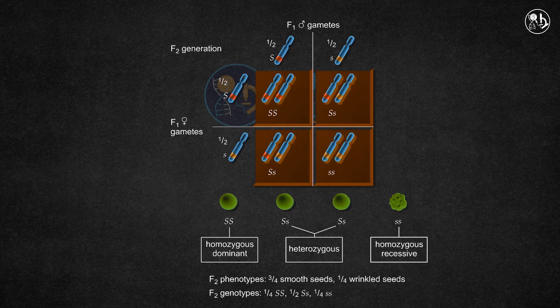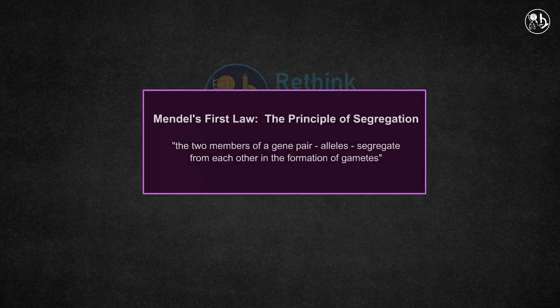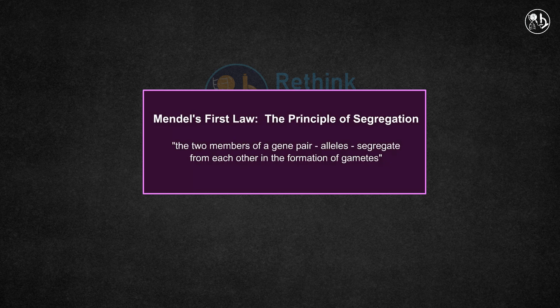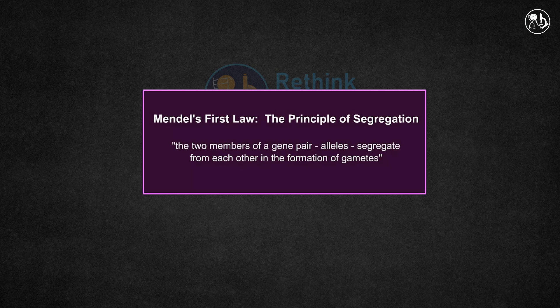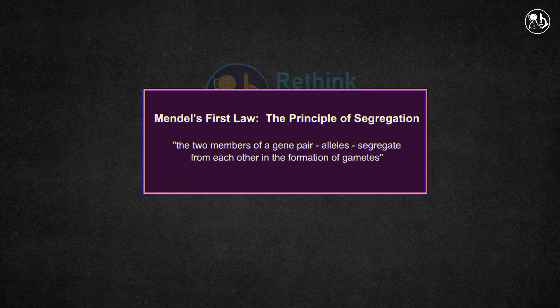The principle of segregation states that the two members of a gene pair segregate from each other in the formation of gametes. This means that both types of factors are equally represented in the gametes even though capital S is dominant over the small s in terms of the resulting trait.